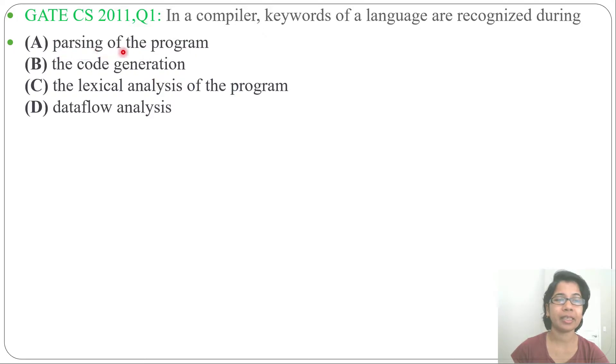First option is parsing, which is syntax analysis. Syntax analysis will generate the parse tree or syntax tree; it will not recognize keywords. Then option B is code generation. It is target code generation that will generate the assembly language; it will not recognize keywords.